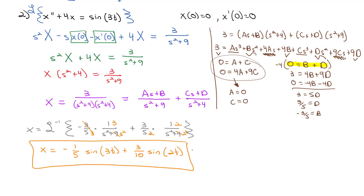Notice the Laplace transform gave us both the complementary solution — which would have been the sine of 2t — and the particular solution, the sine of 3t with a coefficient, all together. We didn't have to separately find coefficients from initial conditions. The Laplace transform is more powerful than our old method for second-order differential equations because it can handle cases beyond constant-coefficient linear equations. Now it's your turn to practice solving Laplace transform differential equations — check your work with other methods where possible, and take a look at the homework.